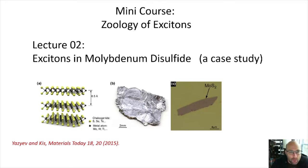Welcome to Mini-Lesson 2 in the Zoology of Excitons mini-course. This time I want to talk about excitons in a particular material called molybdenum disulfide that's been an important optoelectronic material in about the past decade.